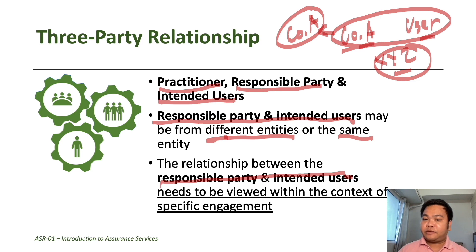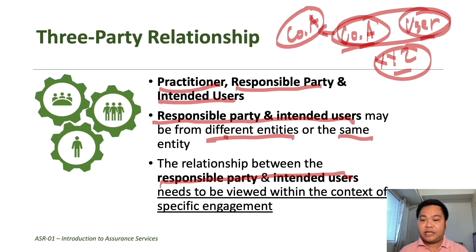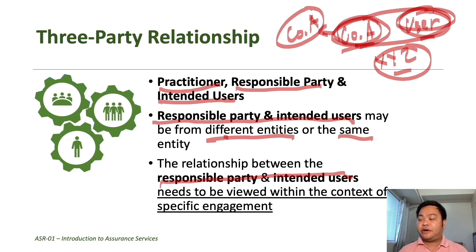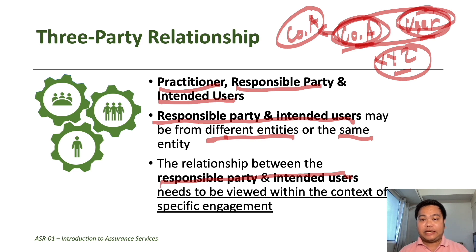For example, if the information provider is the operations department of an entity and the user is the board of directors of the same entity, there are still three parties involved: the operations department, the board of directors of the same organization, and XYZ Auditing Firm. This will still qualify as a three-party relationship for the purposes of the definition of an assurance engagement.